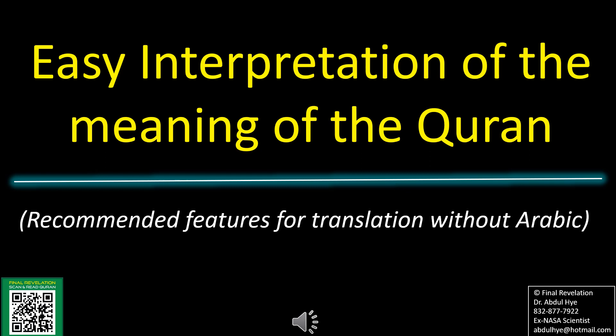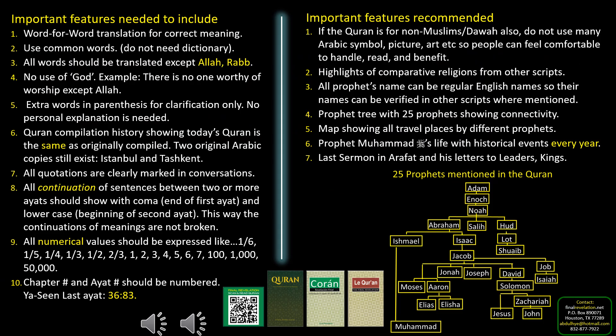Easy interpretation of the meaning of the Quran. These are the recommended features that should be added if the translation is without Arabic. It should be word for word translation. Always use common words. No use of 'God' — instead use Allah and Rabb. Any word needed to clarify should be in parenthesis.